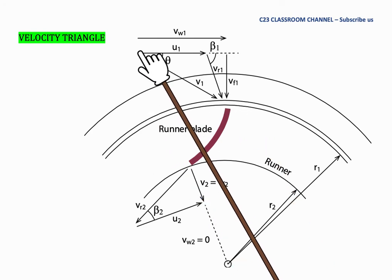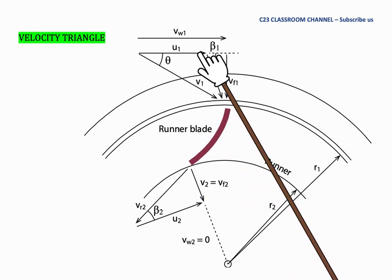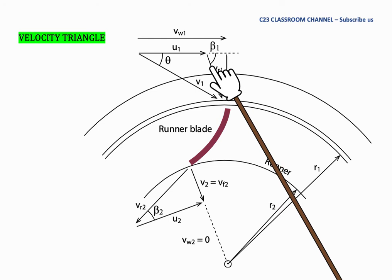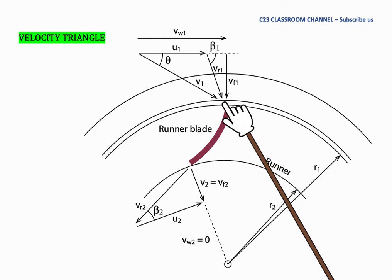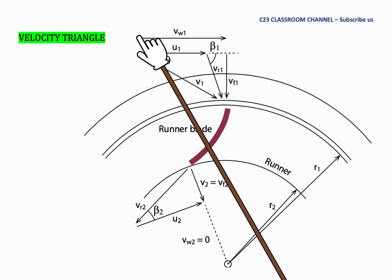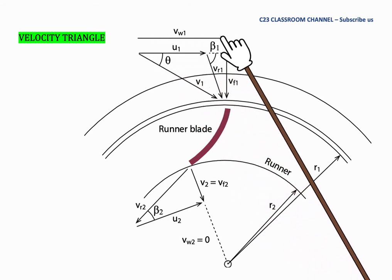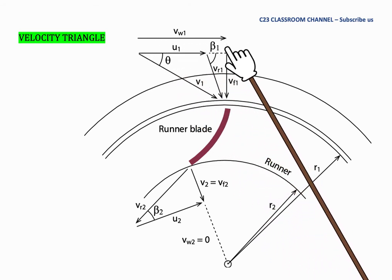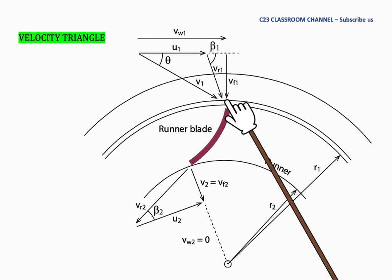So if you can see here, U1 is from here to here and then it continues with Vr1. And Vr1 from here to here and then it continues with flow velocity Vf1.